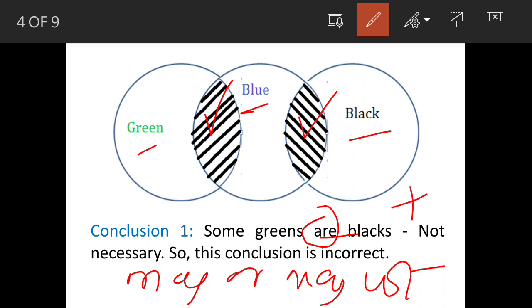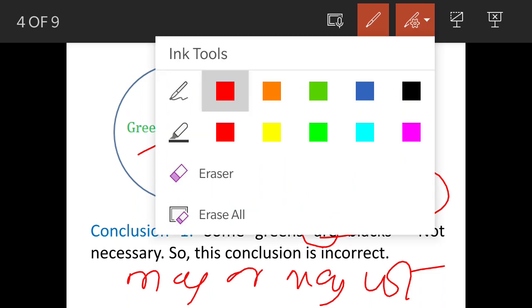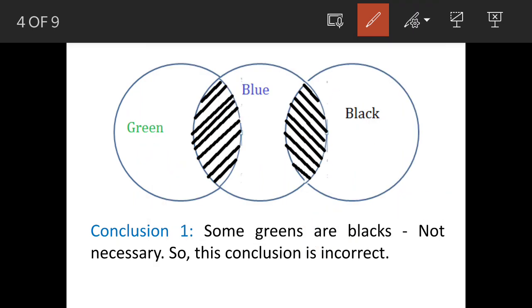It is may or may not condition, this statement is actually not correct. Had it been some greens may or may not be blacks, then the statement was correct. But since it is a definite term, so the statement is not correct. So, hope this is clear. The language is very sticky and you have to be very cautious.